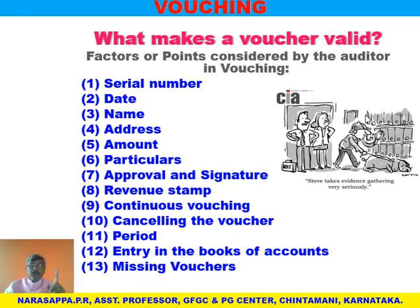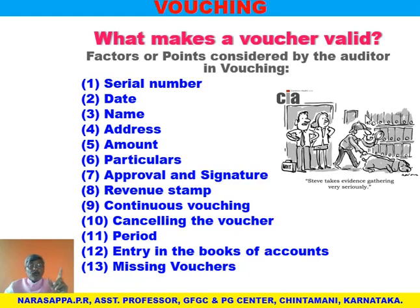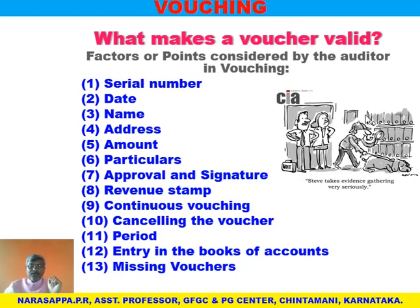Then there should be approval and signature. If a voucher is to be created, one particular authorized person or responsible officer should approve and give permission and keep the signature for that voucher — then it becomes a valid voucher. It should have a revenue stamp; certain times the revenue stamp may not be used but it is necessary for certain transactions. The voucher should be considered for continuous vouching; if not, it is not a valid voucher. Cancelled vouchers — certain times vouchers are created but not used, maybe because of duplication, so they should be cancelled.